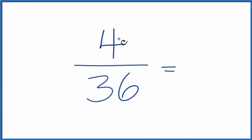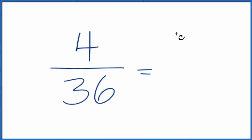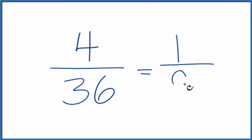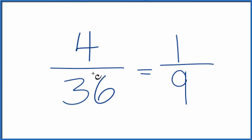You could divide 4 by 4, that gives you 1. And 36 divided by 4, that's 9 — since 9 times 4 is 36. So 1/9 is the simplified fraction for 4/36, and we can't reduce this any further.